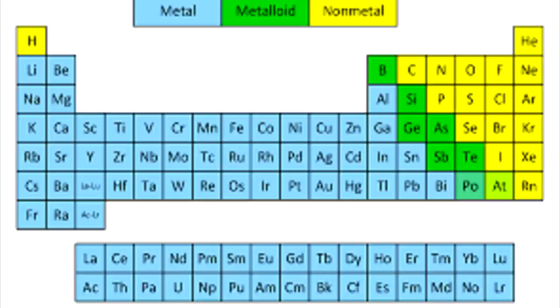Looking at the periodic table, we have metals, metalloids, and non-metals. You can see all the blue colors representing metals.